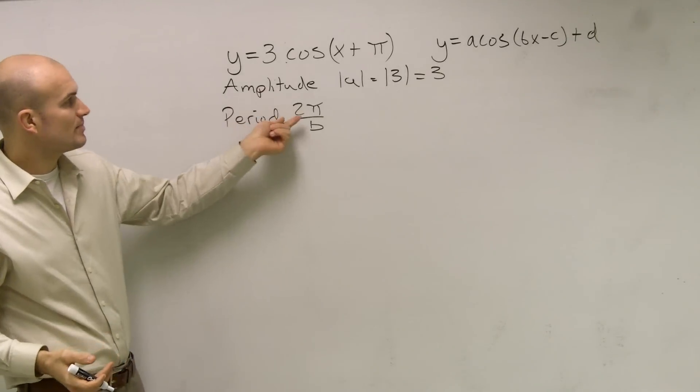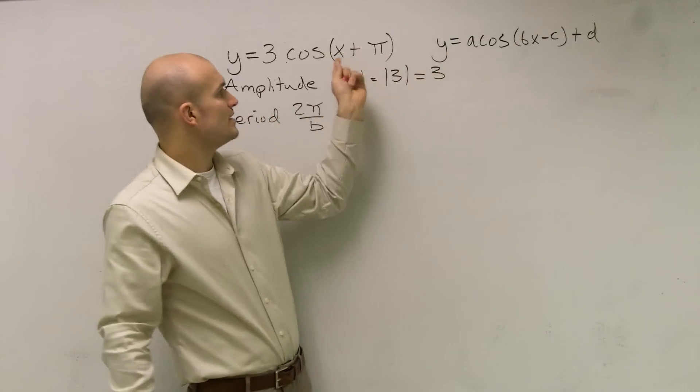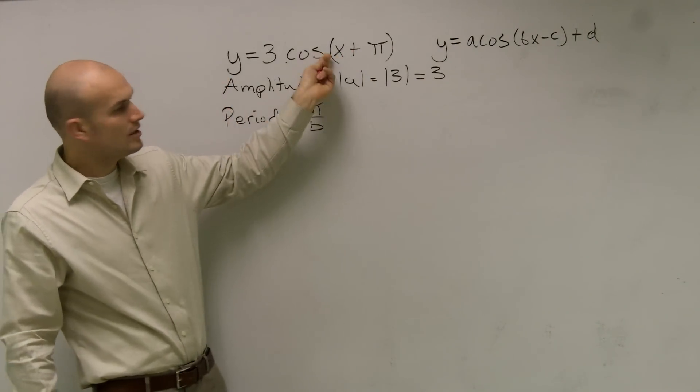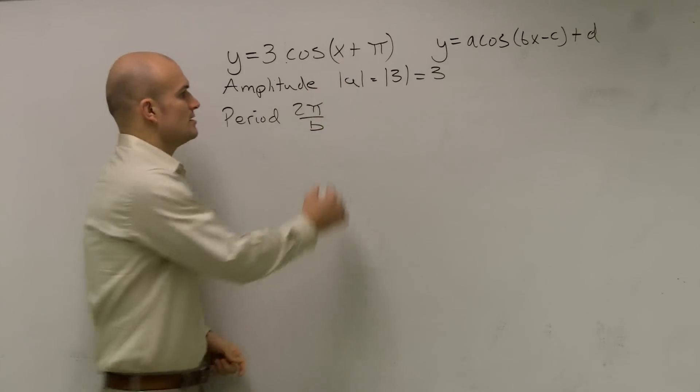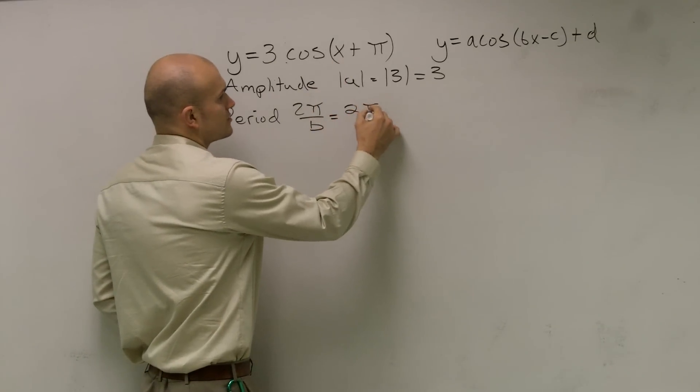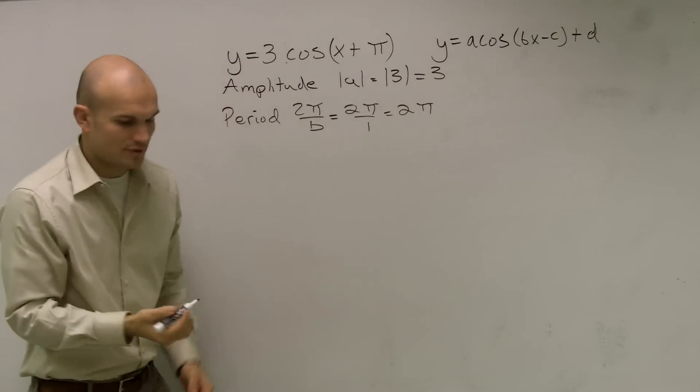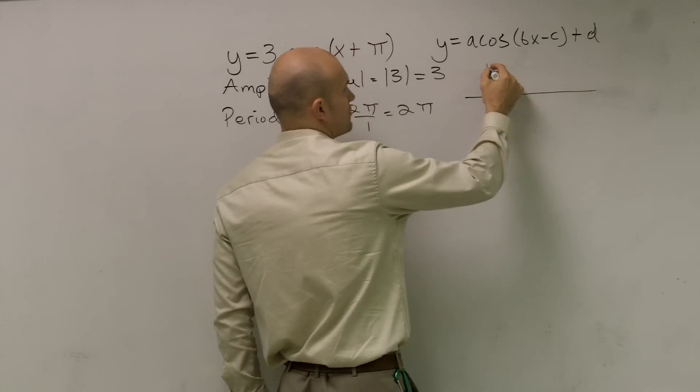Then we need to find the period. You're going to take 2π divided by B, the number in front of your x. We notice there's a 1 in front since we're not representing it. So our period is simply 2π over 1, which is 2π. Now remember, if you remember what our period looks like, I'll just do one period.